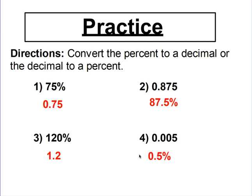Look at questions three and four. You'll notice that percents can be over 100%, and percents can actually be decimals themselves. So just keep that in mind — percents can go over 100 and under one, or they can even be negative.